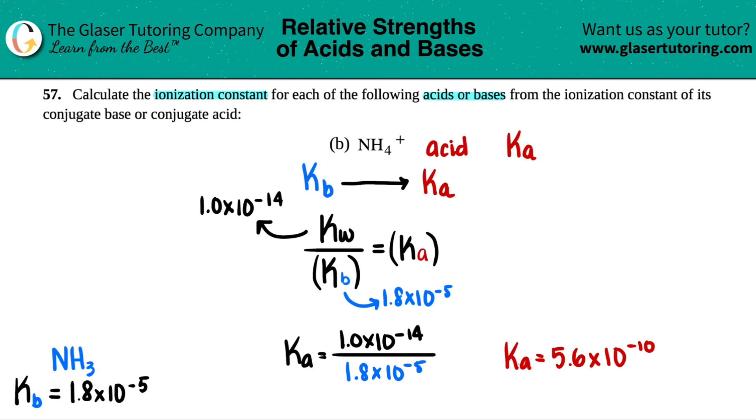And there you go. That is your corresponding Ka for NH4+. That's it, guys. That's all I got. Stick around because we'll be doing letter C next in a little bit.